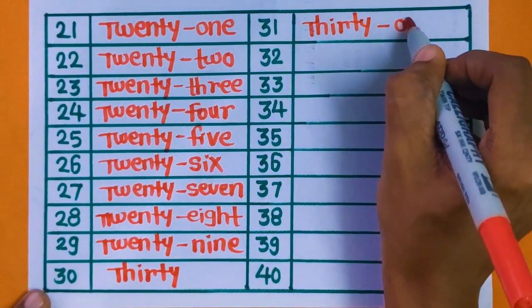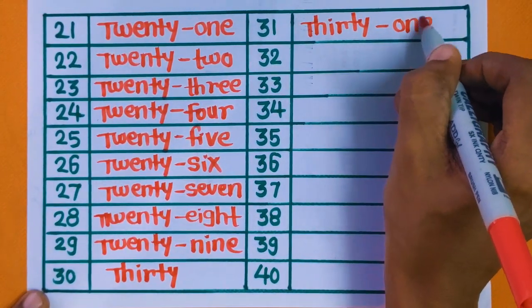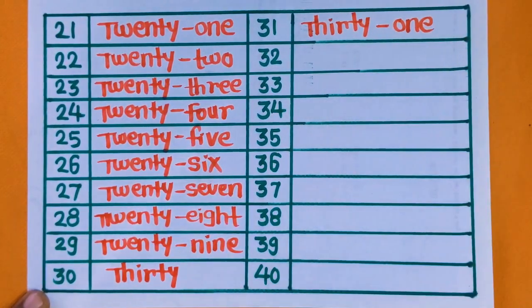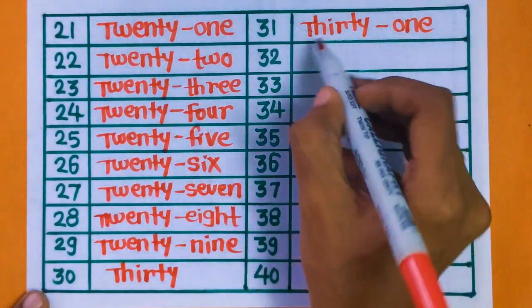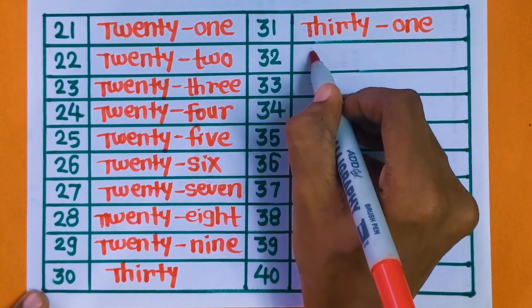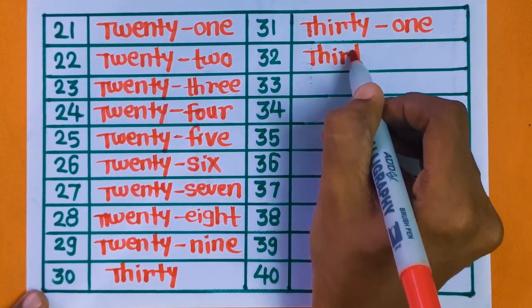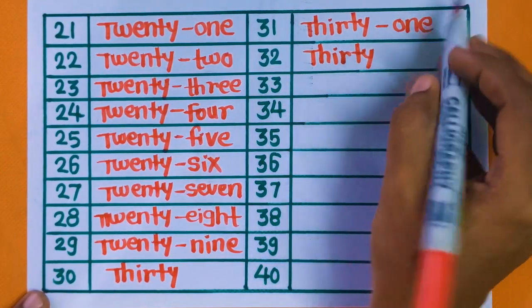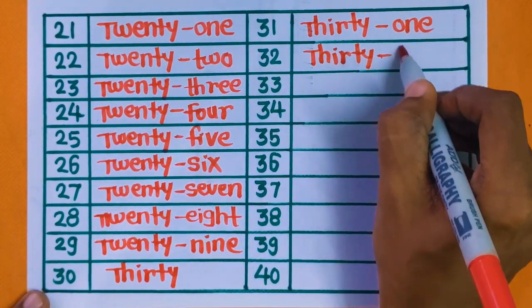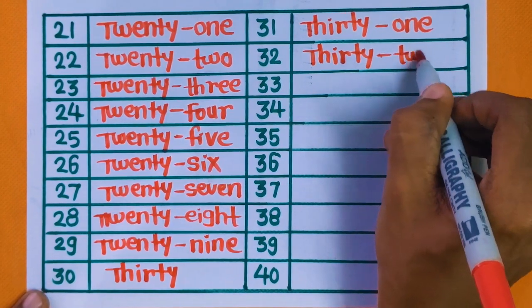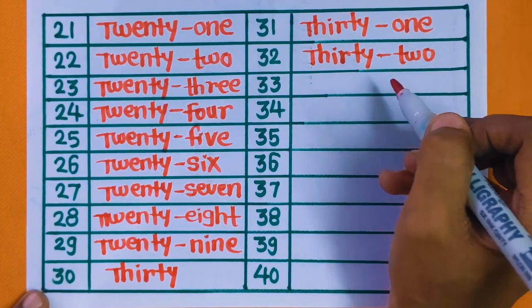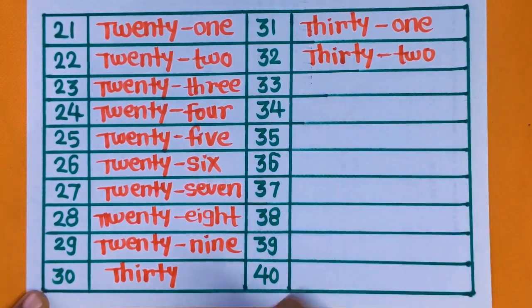Next is number 31 — THIRTY ONE. 32 — THIRTY TWO. 32.